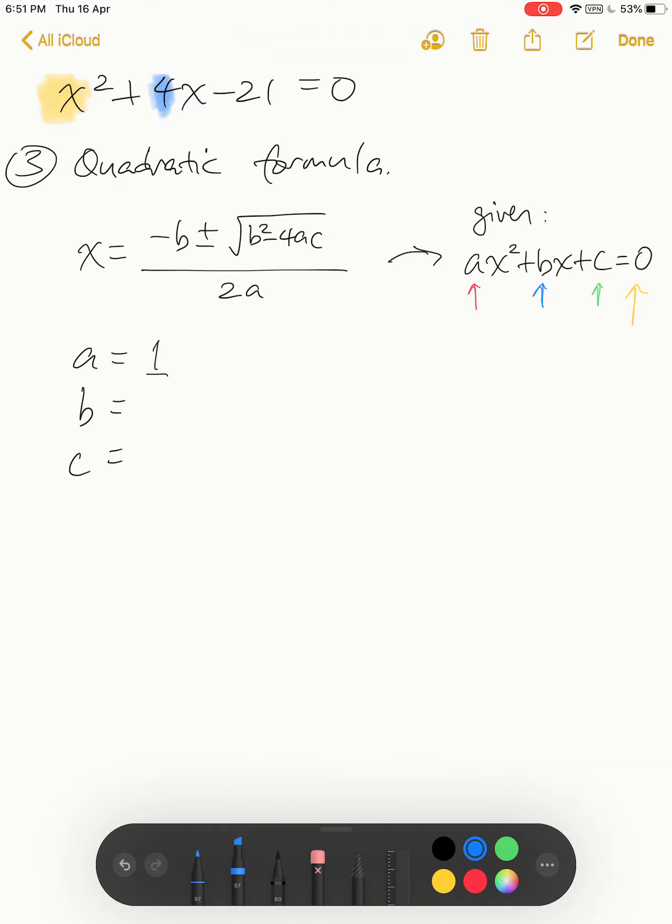And what is my c? C in this case is negative 21. Remember the sign follows the number—don't just write 21, the sign has to follow the number.